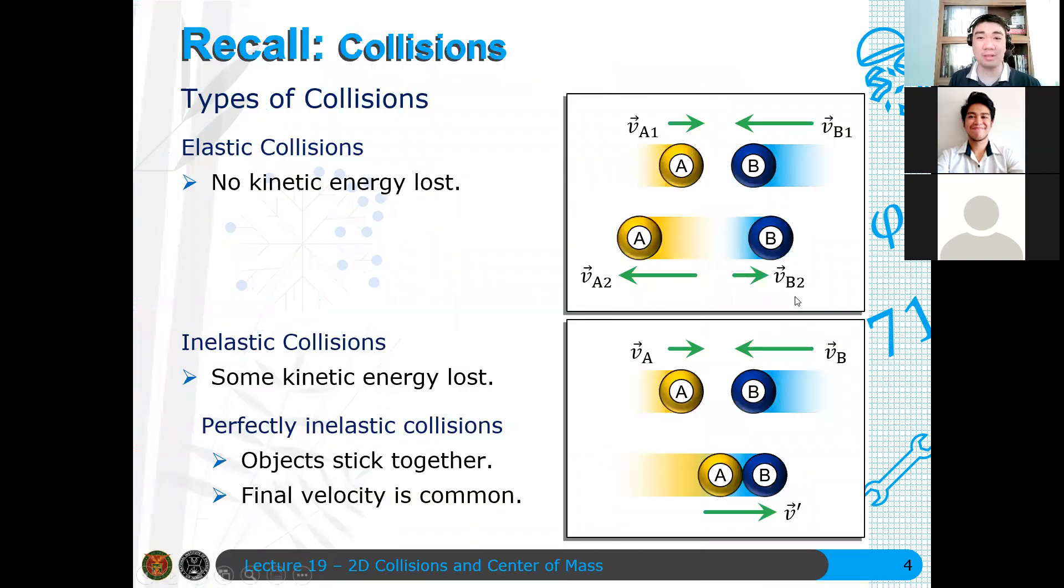Just recall our collisions. There are two types of collisions: elastic collisions wherein kinetic energy is conserved and there is no kinetic energy lost. Using the first notation, if the subscript 1 denotes initial or the event before the collision, the kinetic energy is just transferred from A to B.